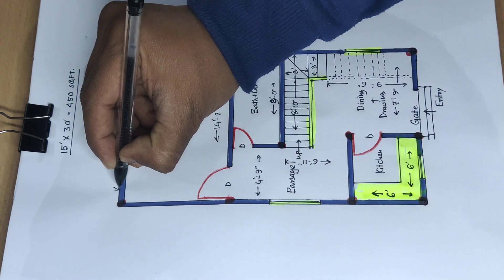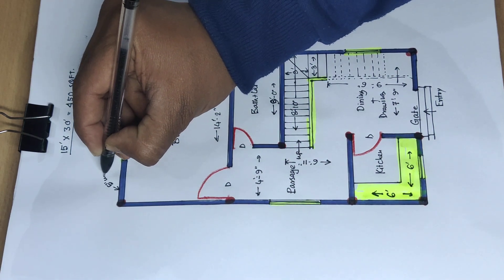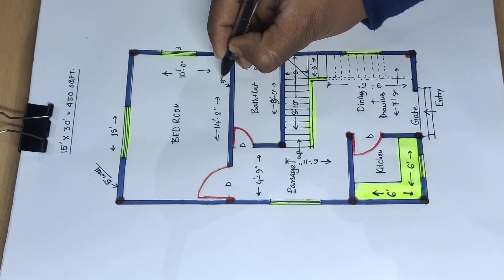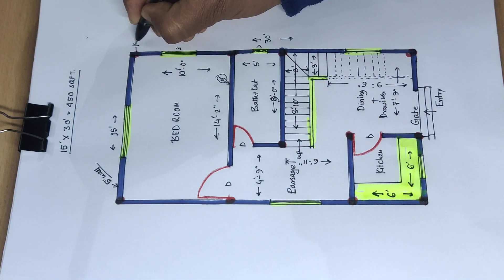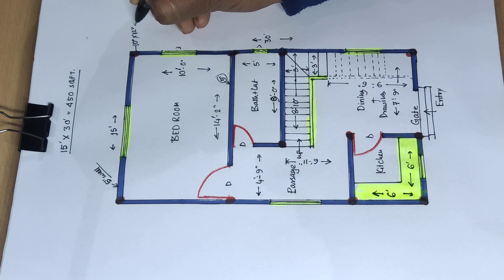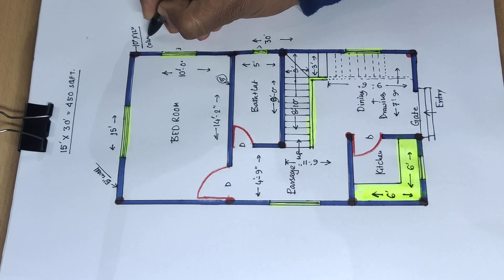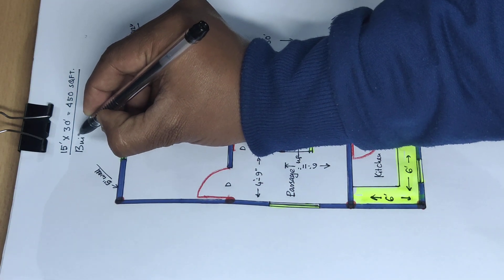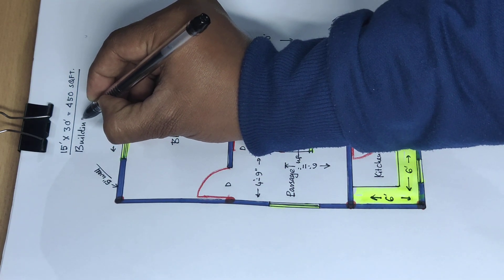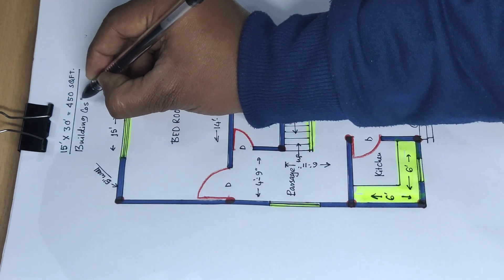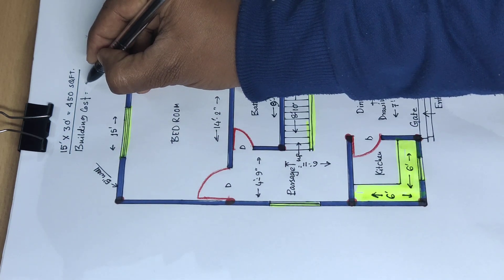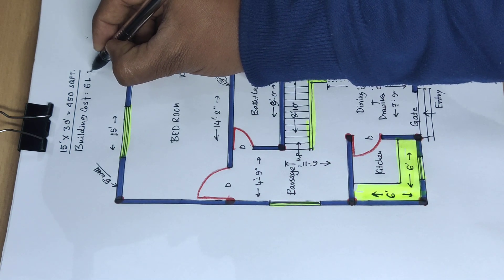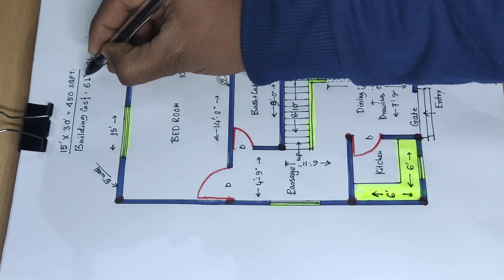Outside wall 5 inch wall, and inside wall 5 inch wall. Column size 10 inch into 12 inch column. And total building cost 6 lakh to 8 lakh.